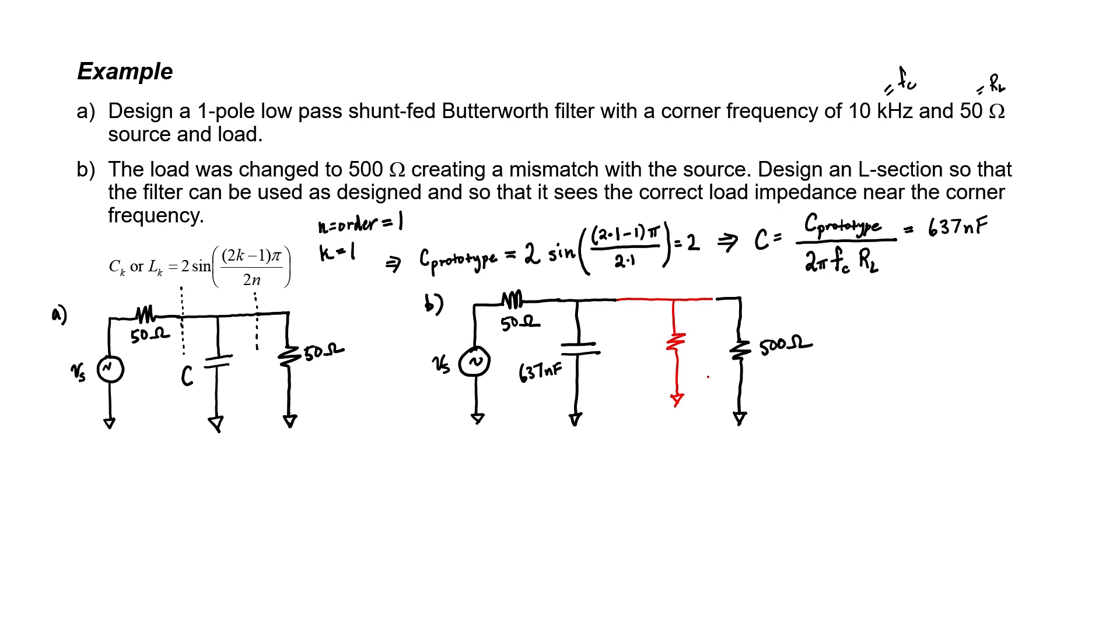Of course the real load impedance would still be 500 ohms, but sometimes it's not good to use this solution because we wind up adding an extra resistor or additional loss into our circuit. So in this problem we're going to be using an L-section instead.